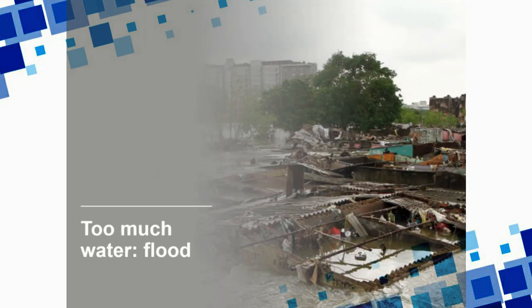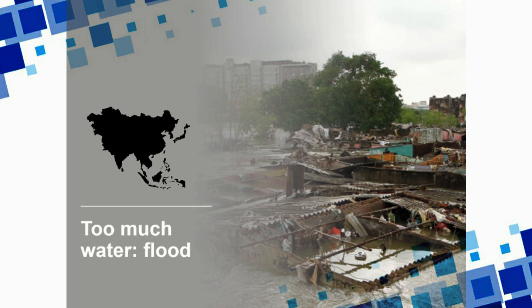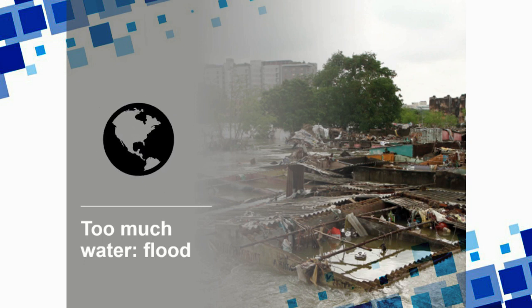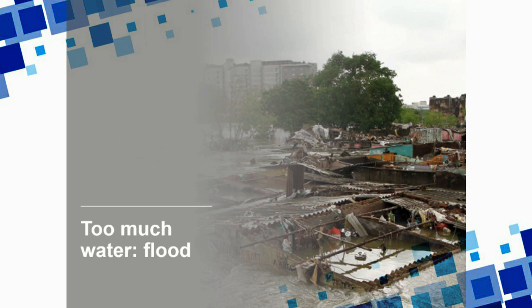Another final problem is too much water — floods. This is a very persistent problem in certain parts of Asia especially, but it could affect any part of the world with rivers that overflow. There are ways to manage and control the flow of a river; a dam could do so. You might wonder if states are under an obligation to undertake efforts to better manage rivers and contain them in case of extreme weather events such as floods.